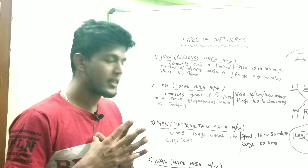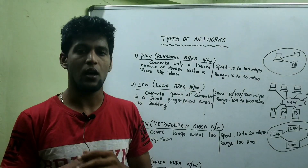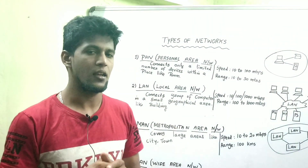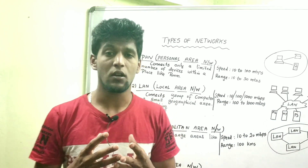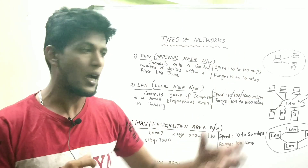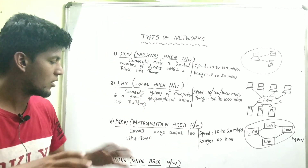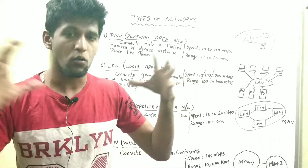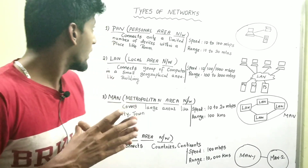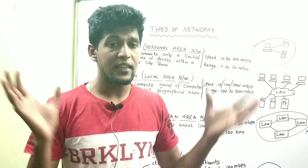A WAN — Wide Area Network — covers a large geographical region. It can be an intercontinental connection or an international connection, even state-to-state. A WAN is made up of many local area networks and many MAN networks all connected together, spanning an entire country or beyond.